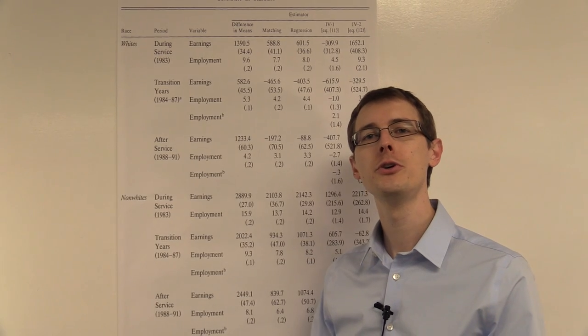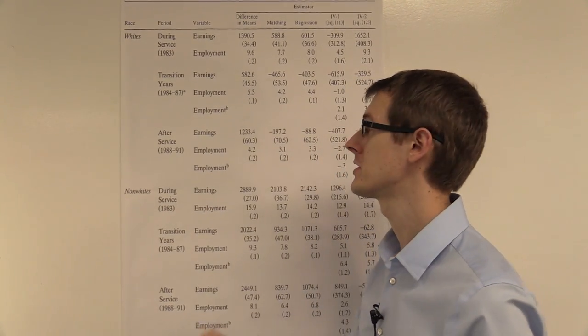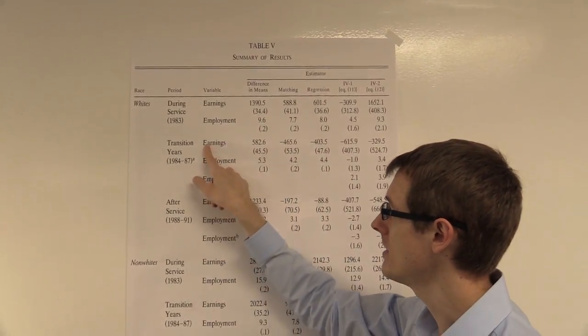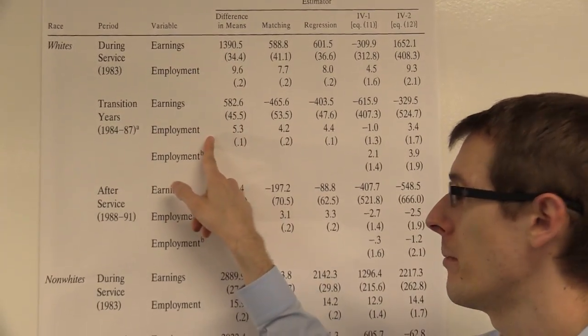Furthermore, he's going to look at two different outcome variables, how much money you actually make, which we saw in the previous graph, which he labels earnings, and then whether you are employed or not, which he labels employment.